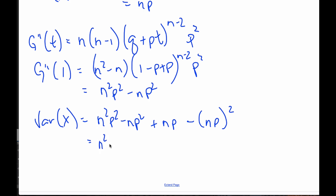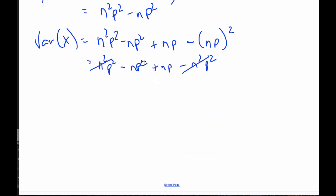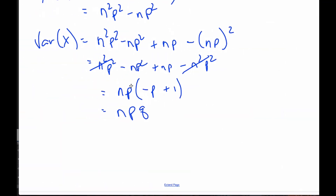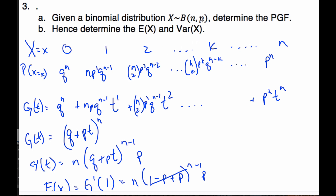Expanding this out: n²p² − np² + np − n²p². The n²p² terms cancel, and pulling out np from the remaining terms gives np(1 − p), which is npq. So the variance of x is npq. Checking against our formula guide: binomial distribution has expected value np and variance npq — which I've just proved using the probability generating function.